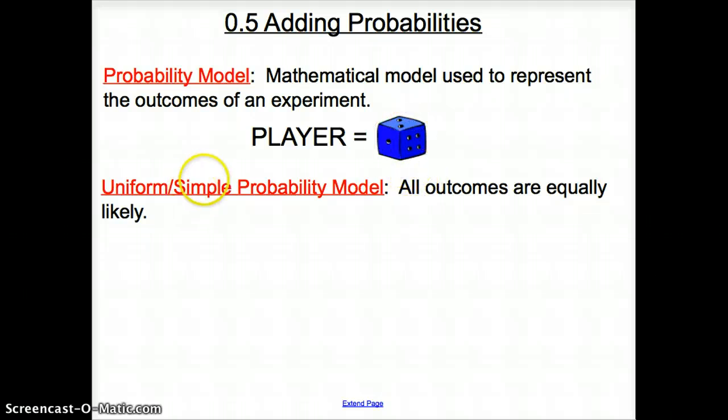A uniform or simple probability model all it means is that all outcomes are equally likely. So on this dice, the 1 would be just as likely as rolling a 2. A 2 would be just as likely as rolling a 3. Next, theoretical probability.